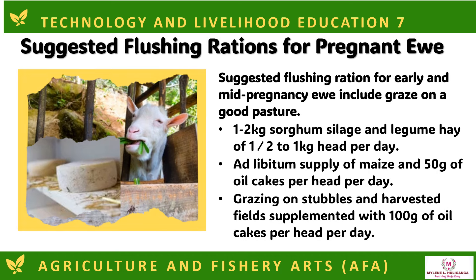Suggested flushing rations for pregnant ewes include grazing on good pasture, 1–2 kilograms of sorghum silage and legume hay of 1–2 kilograms per head per day, ad libitum supply of maize and 50 grams of oil cakes per head per day, and grazing on stubbles and harvested fields supplemented with 100 grams of oil cakes per head per day.